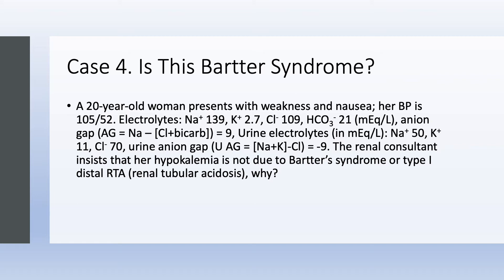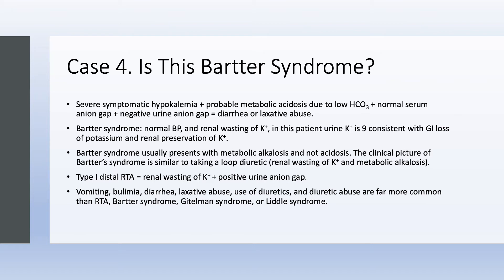Let's discuss this case. We have severe symptomatic hypokalemia, potassium 2.7, plus probable metabolic acidosis with low serum CO2. We have a normal serum anion gap and a negative urine anion gap. This pattern is consistent with diarrhea or laxative abuse — hypokalemia with normal anion gap metabolic acidosis and a negative urine anion gap. Bartter syndrome would show renal wasting of potassium, but here urine potassium is only 11, consistent with GI loss such as diarrhea.